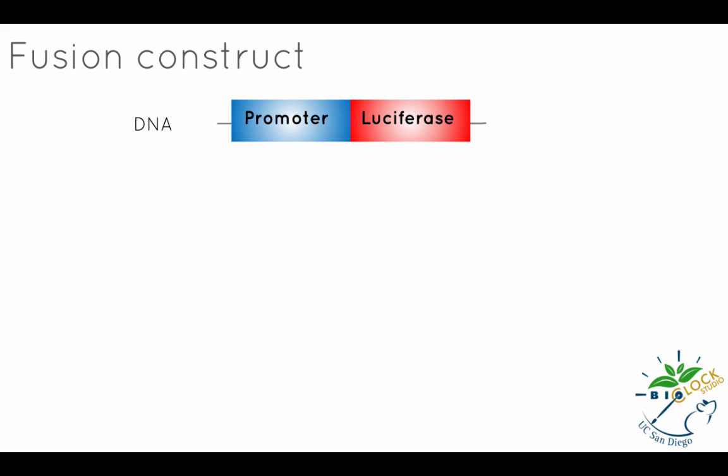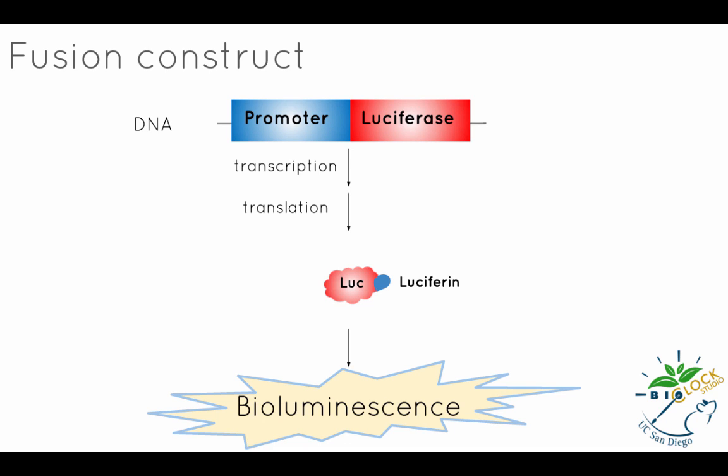Once you've acquired a construct containing the luciferase reporter, the next step is to introduce this construct into your cells of interest. After being incorporated into the genome, the luciferase gene is transcribed to produce its corresponding messenger RNA. This mRNA is translated into an active luciferase protein, which when provided with its substrate luciferin can then catalyze a reaction with oxygen to produce light. The resulting light intensity is measured by detection instruments which are highly sensitive to bioluminescent light. This light production is correlated with the amount of luciferase produced, which is dependent on the activity of the promoter. So the more activity of the promoter of the gene of interest, the more light will be produced in the cell by luciferase.